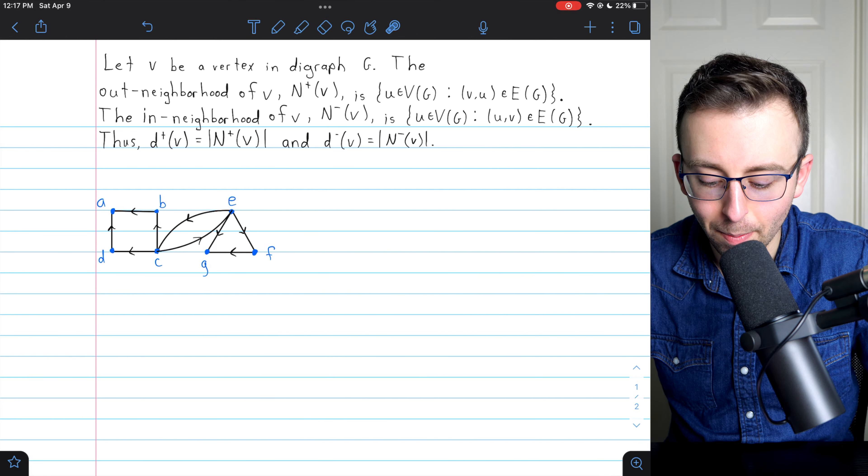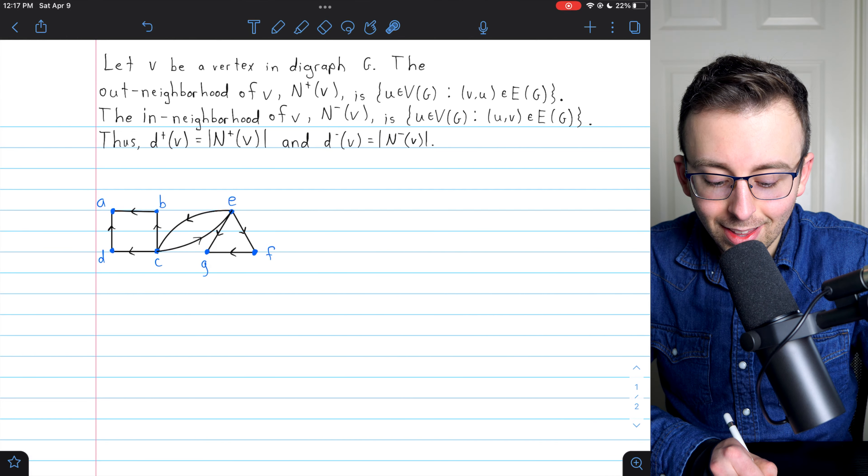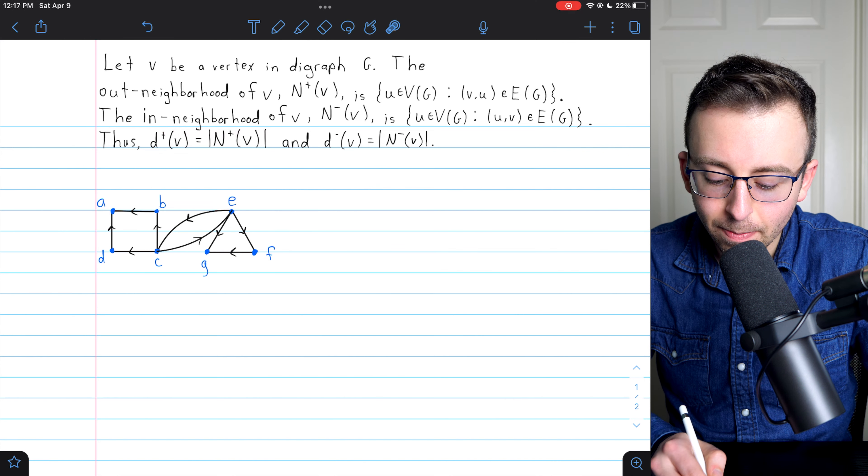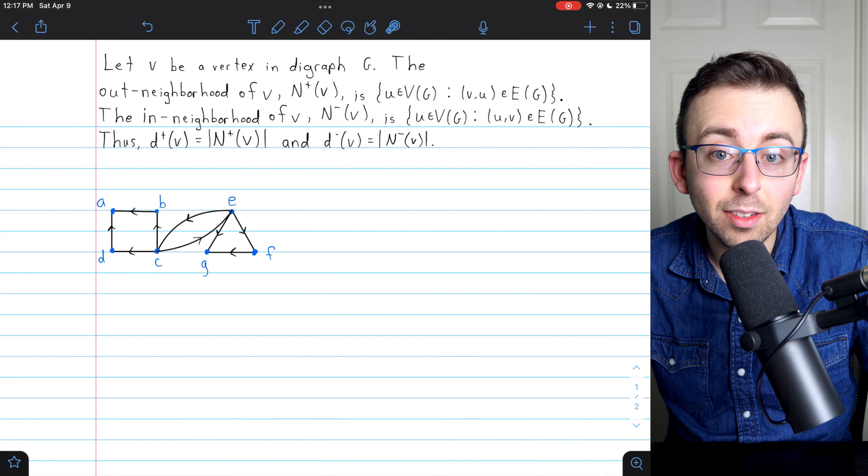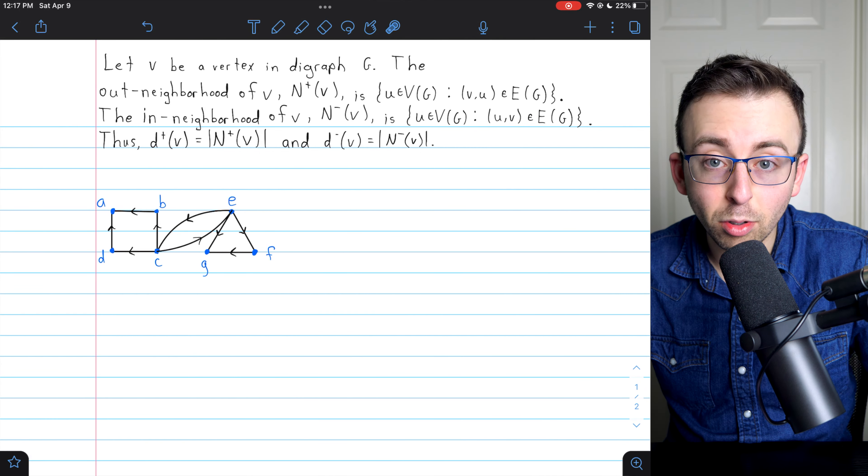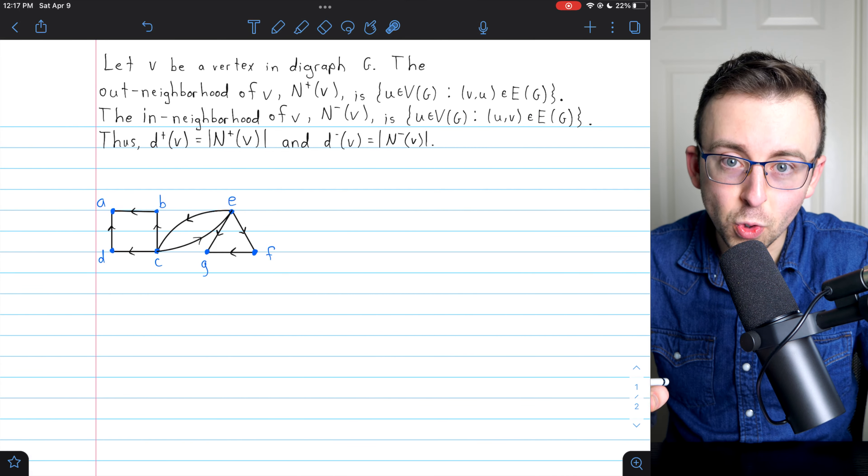I'm assuming you already know about that. Similarly, the in-neighborhood of V, denoted N^-(V), is the set of vertices that V is adjacent from. These are the vertices that are adjacent to V.